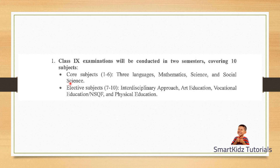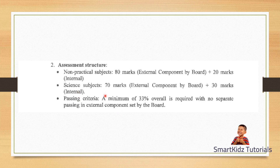So there are totally 10 subjects — 6 core subjects and 4 elective subjects. Different schools may have different vocational or NSQF subjects based on teacher availability. Regarding the assessment structure, for non-practical subjects — which includes all subjects except science — the external component set by the board will be for 80 marks, and there will be 20 marks of internal assessment. The reason it is called 'external' is that previously the school set the paper, but now the paper will be set by Goa Board.